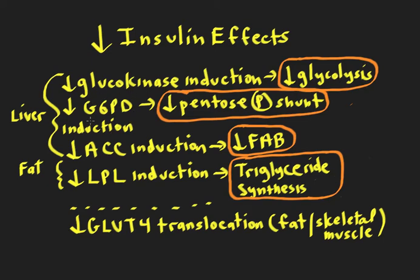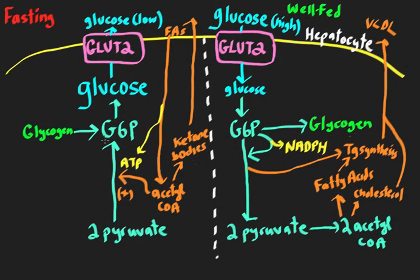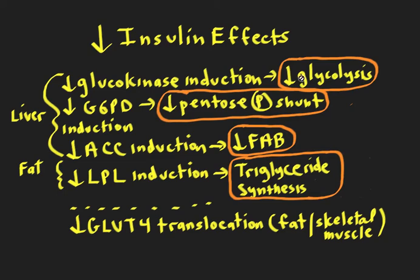Glucose 6-phosphate dehydrogenase (G6PD) is an important enzyme in the pentose phosphate shunt. We want that turned off because we don't want glucose 6-phosphate going anywhere other than back to glucose to be exported. The pentose phosphate shunt makes NADPH, which you need to make fatty acids and cholesterol — and those processes are turned off, so it makes no sense to have this reaction on. So less insulin means less G6PD induction. Also, acetyl-CoA carboxylase — the rate-limiting step of fatty acid synthesis — is induced by insulin, so less insulin also helps turn off fatty acid biosynthesis.